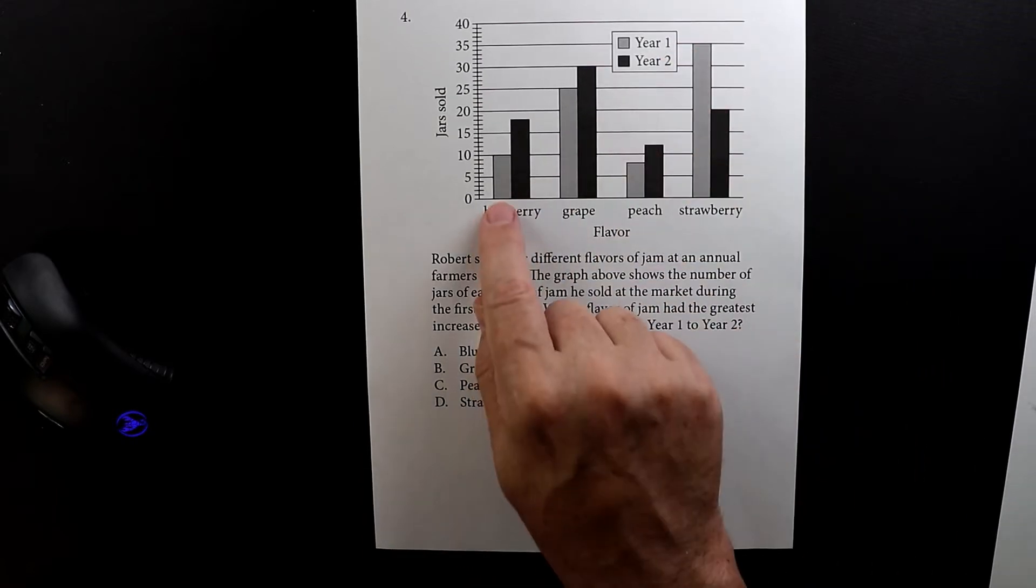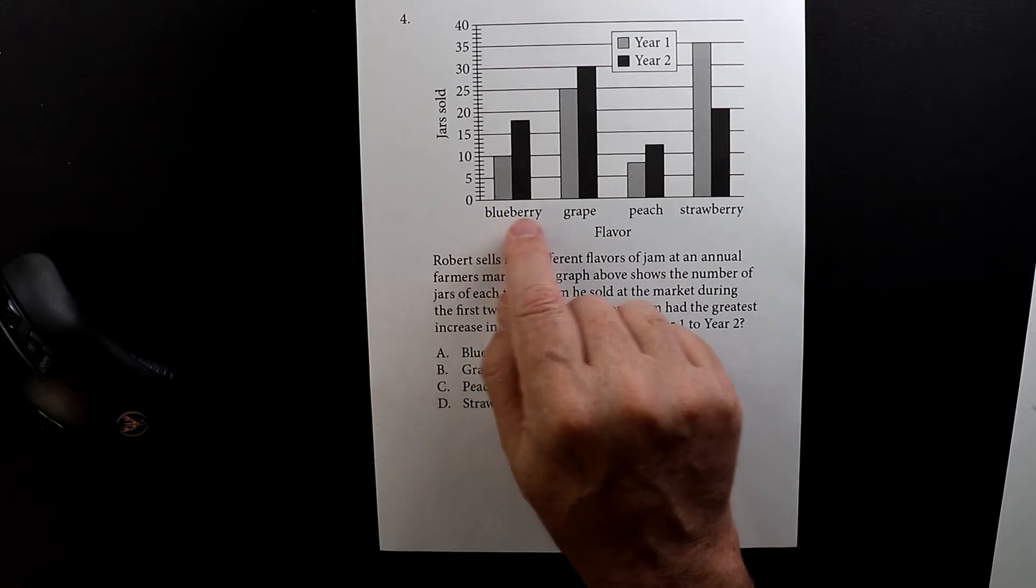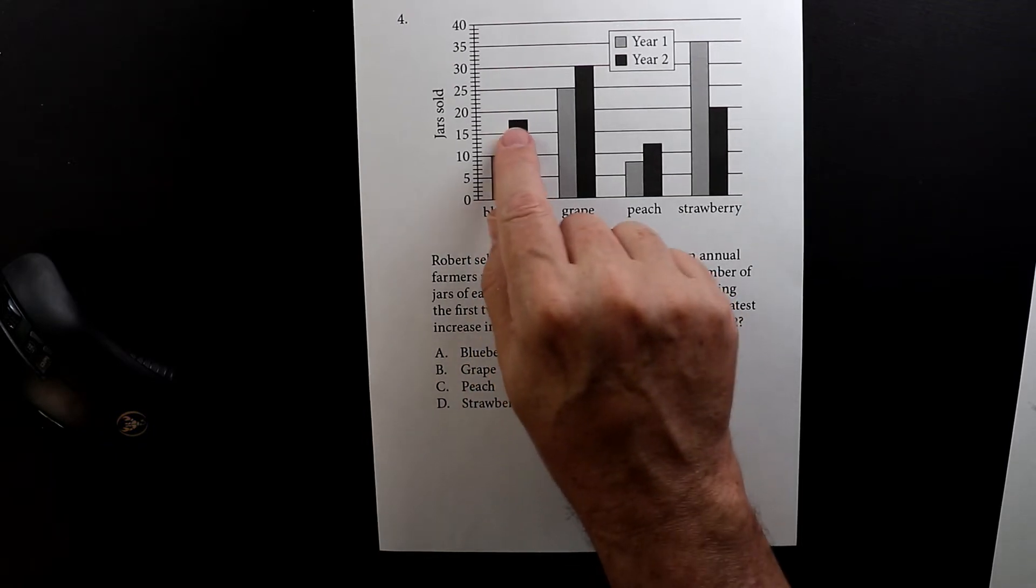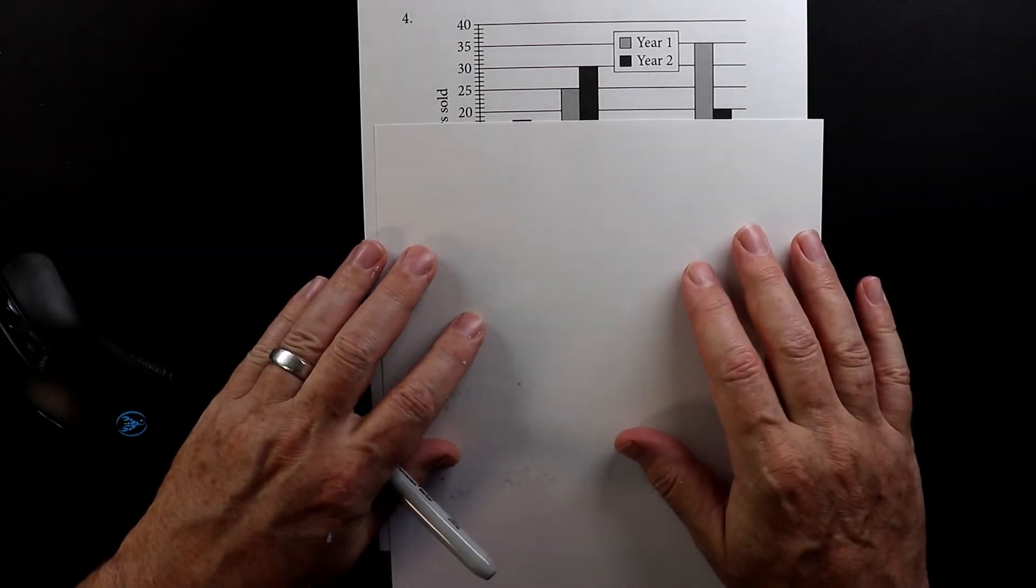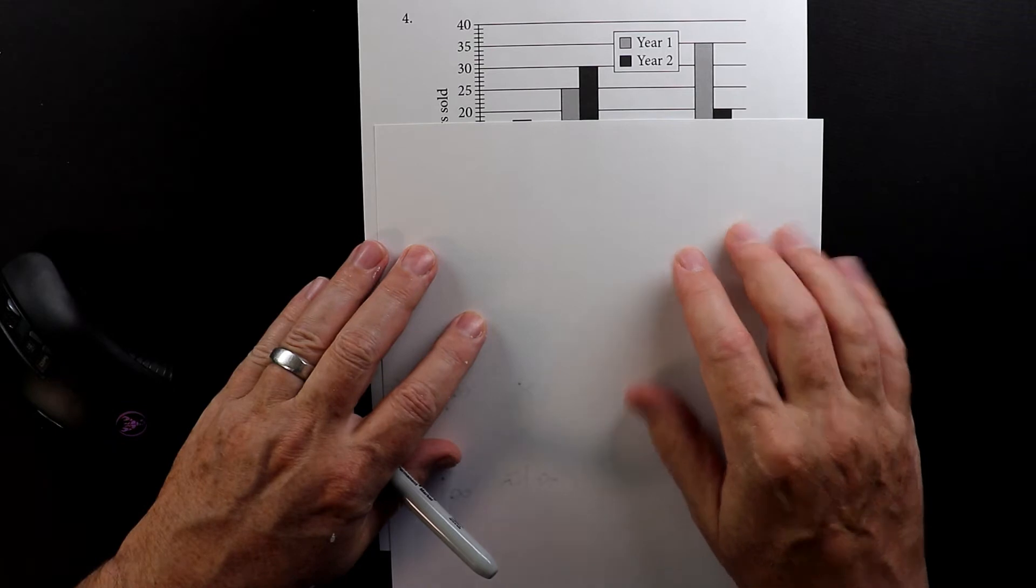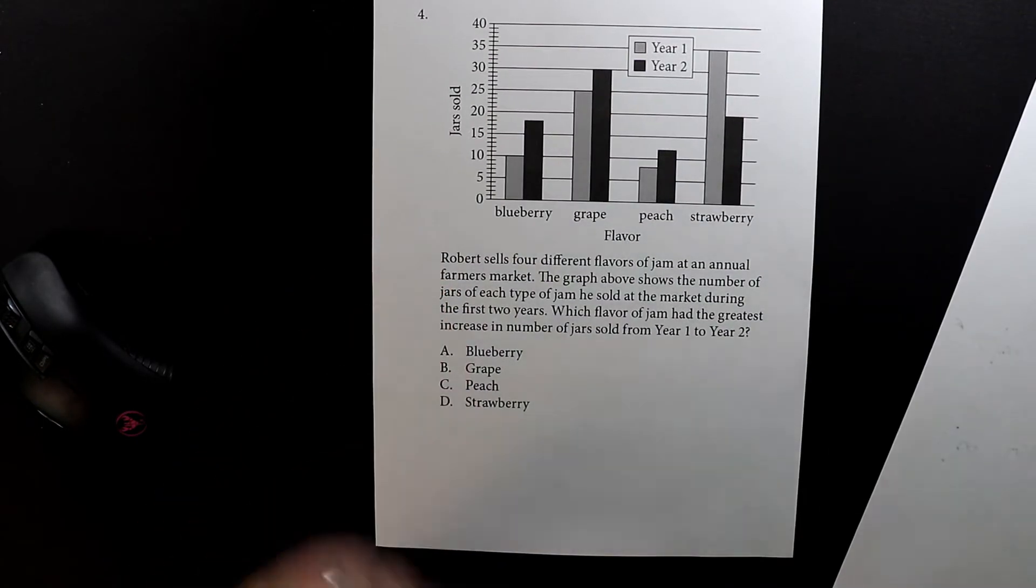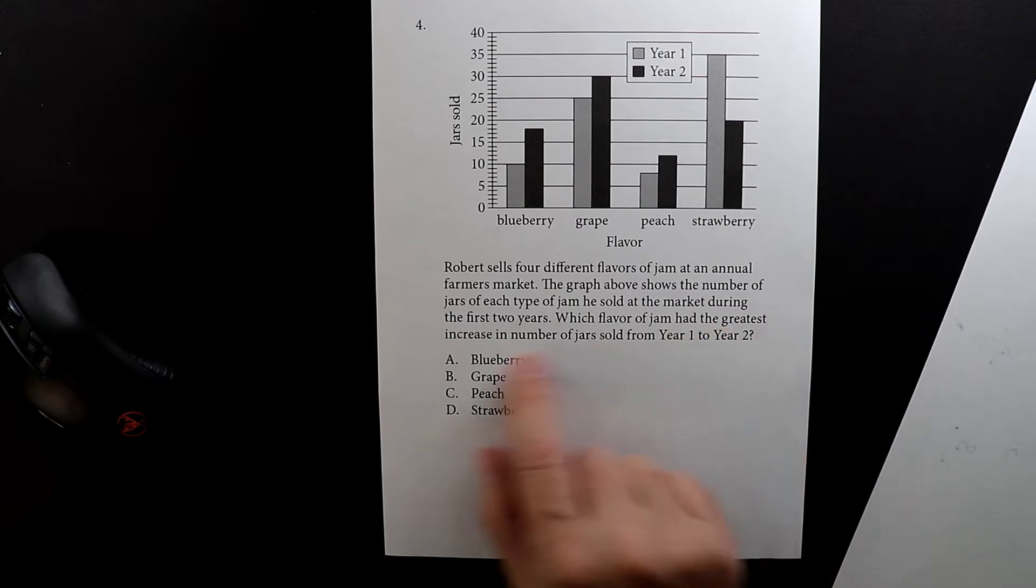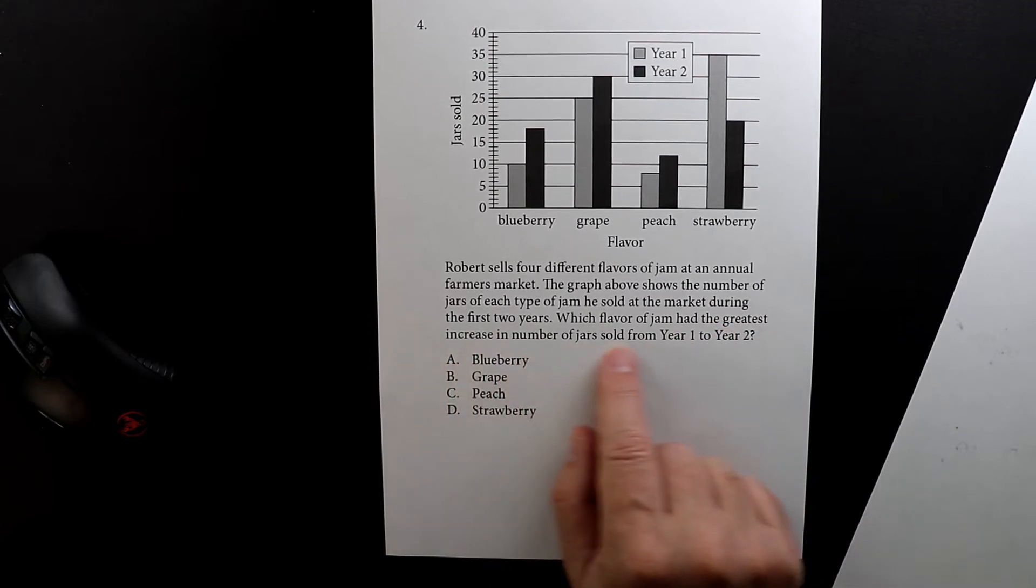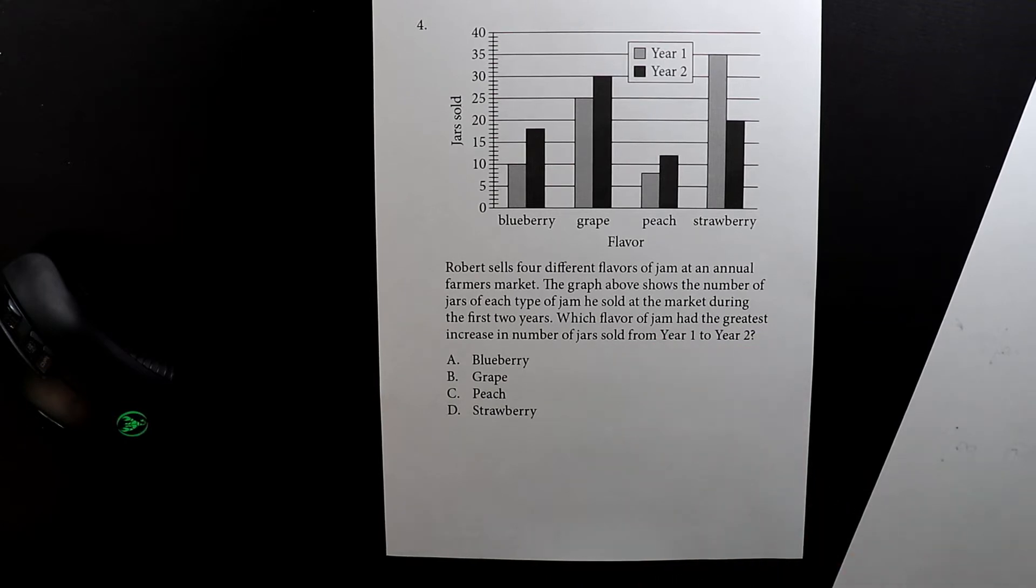So the first year he sold 10 jars of blueberry jam and then the second year he sold looks like to be about 18. And the way you can be for sure is you can put a piece of paper there and you can see that it goes right there, so 18, 19, and then goes up to 20. But you don't really have to be that exact for this problem. So which flavor of jam had the greatest increase in number of jars sold from year one to year two?